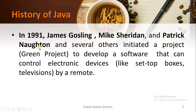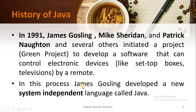The Java project was initiated by Sun Microsystems. They wanted to develop software to control electronic devices by a remote — electronic devices like set-top boxes and televisions. In this process, James Gosling developed a new system-independent programming language, and that is Java.